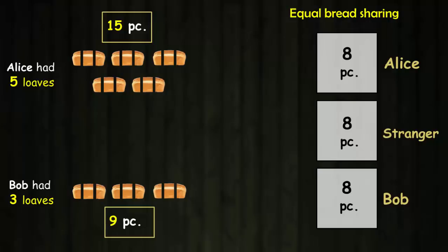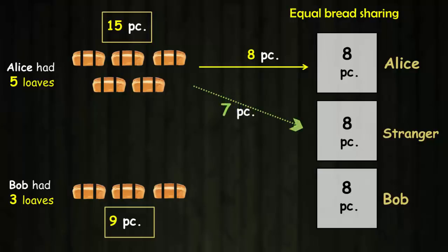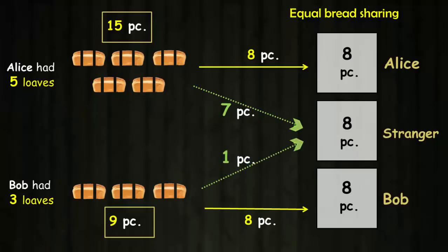Alice consumed eight pieces out of her fifteen. That means she shared seven pieces with the stranger. Similarly, Bob consumed eight pieces out of his nine, and that means he shared only one piece with the stranger.